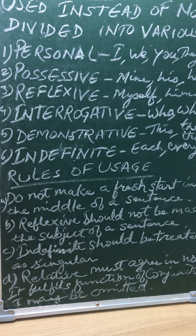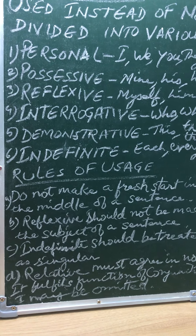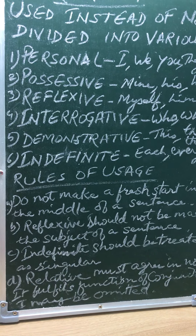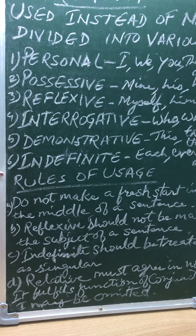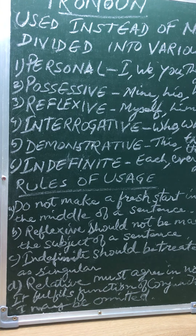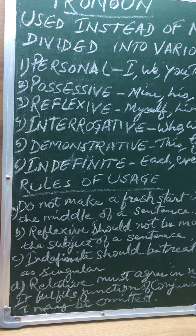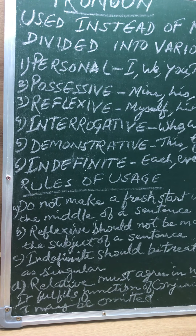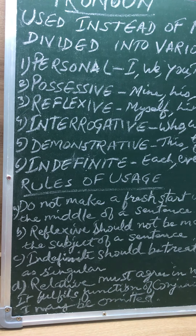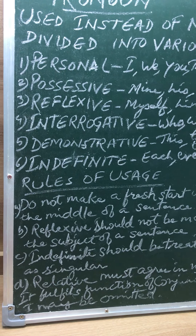Now next we will do the rules of usage. The first rule says: do not make a fresh start in the middle of a sentence by introducing a pronoun which is in the same structural relation as the noun for which it stands. For example: 'The boy who stood first, he is my brother' — here 'he' is not required, as it simply inserts another subject for the verb 'is' when one subject 'boy' is already there. The correct form is: the boy who stood first is my brother.